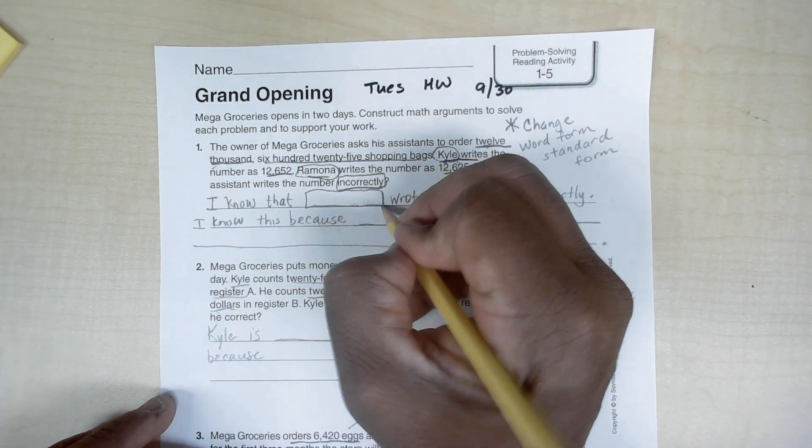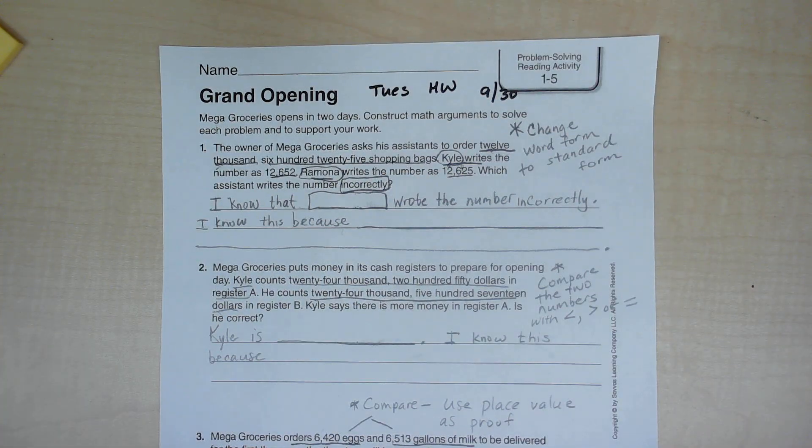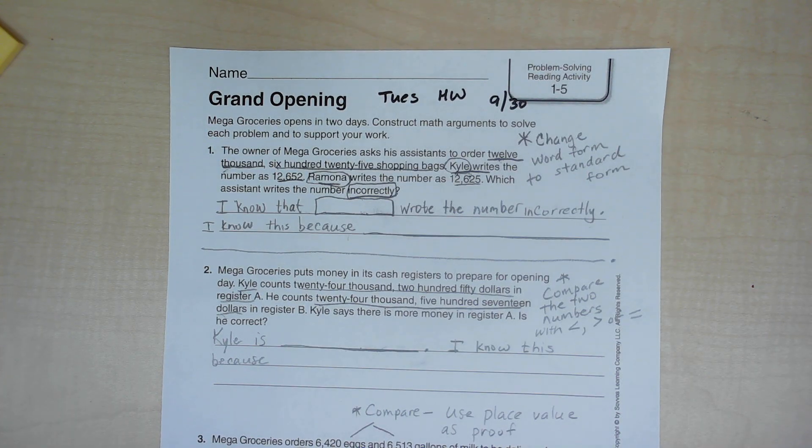I know this because... so you have to give a reason how you know the number's written incorrectly. What you want to do is change the word form to number form, then you'll know who wrote it incorrectly.